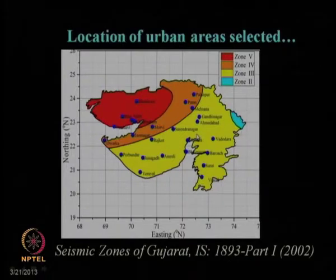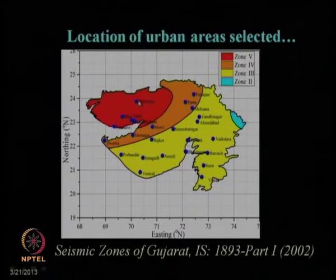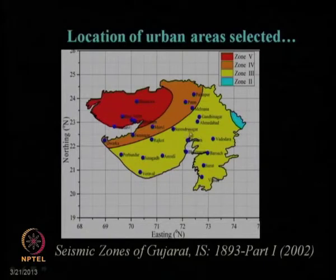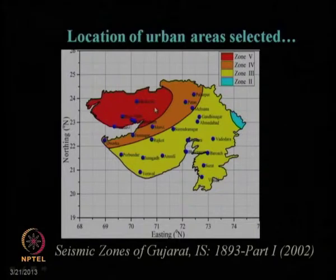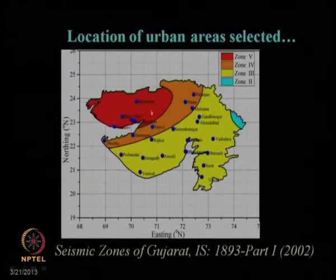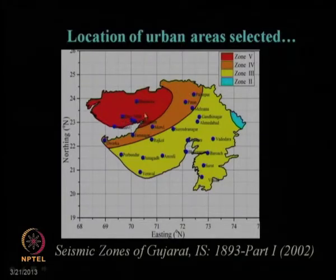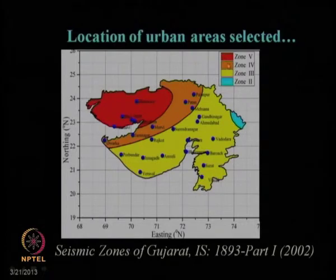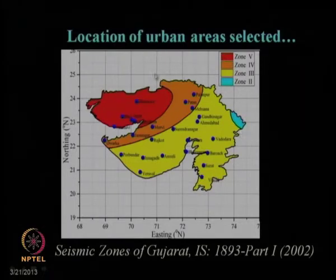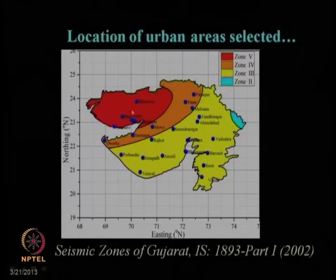That is another reason why the Gujarat state has been chosen. Another reason is the 2001 Bhuj earthquake — a very damaging earthquake which occurred in the Bhuj region of Gujarat and affected several other parts of Gujarat as well. That is why we want to carry out the seismic hazard study for the Gujarat region.